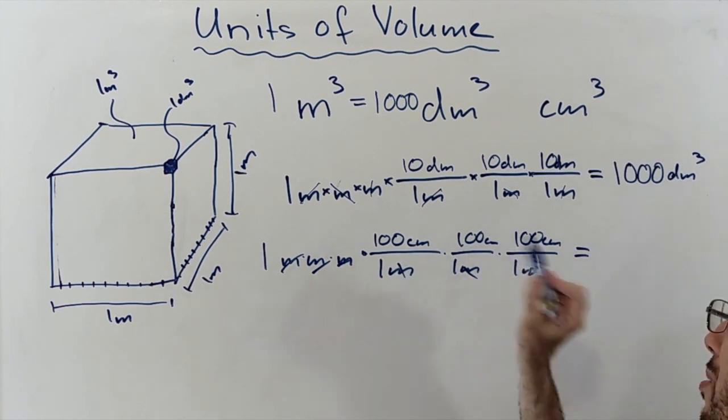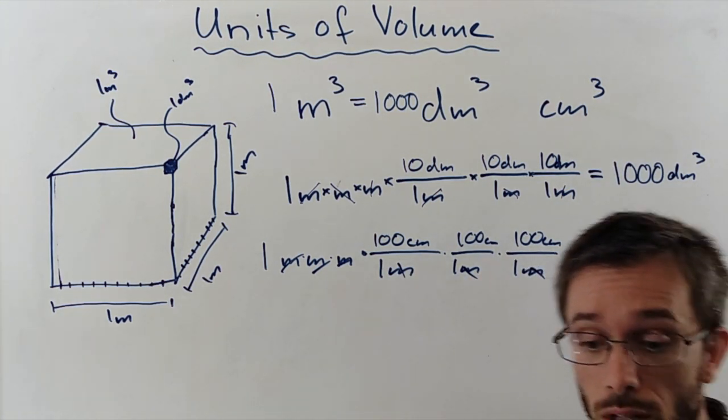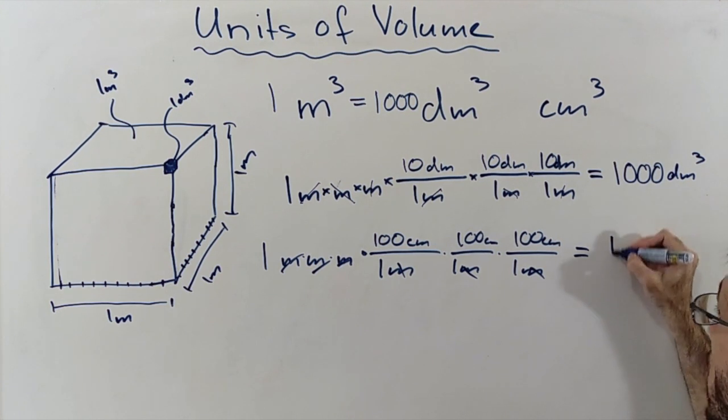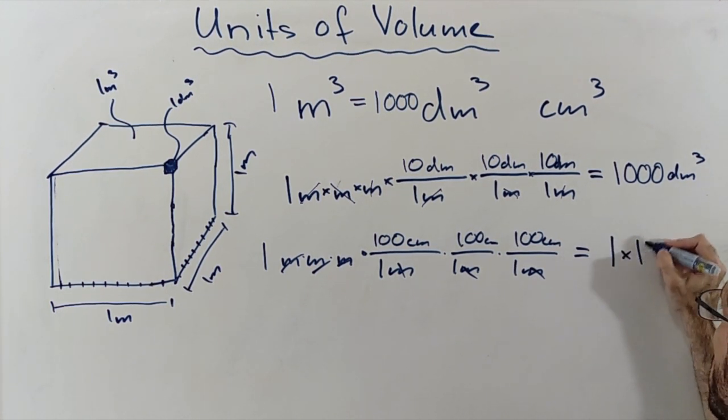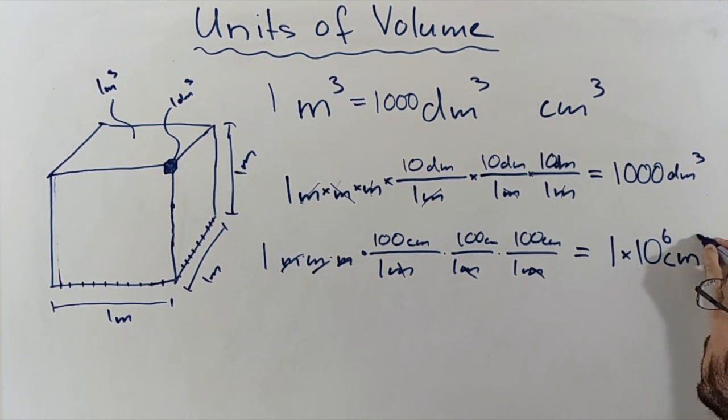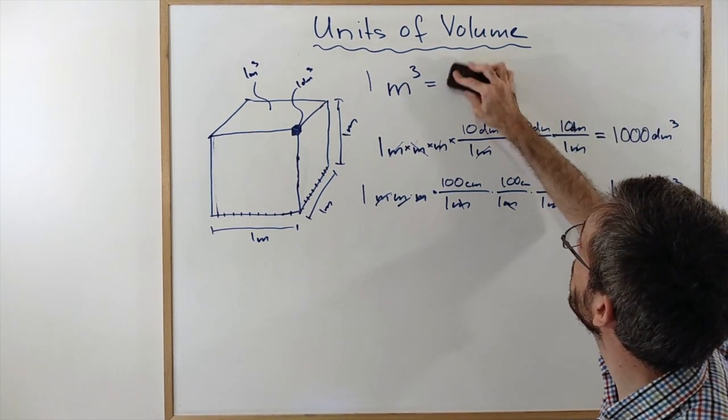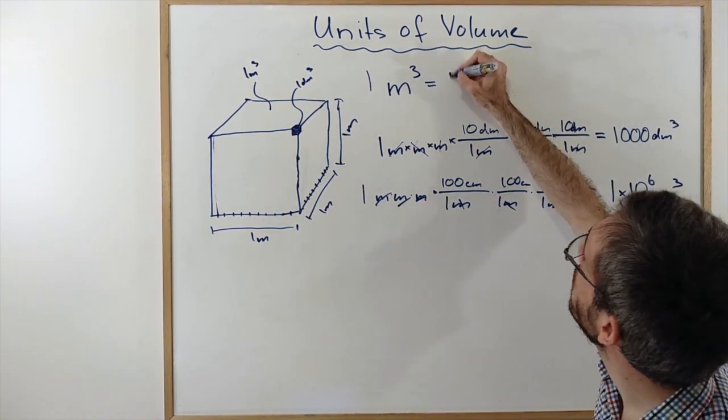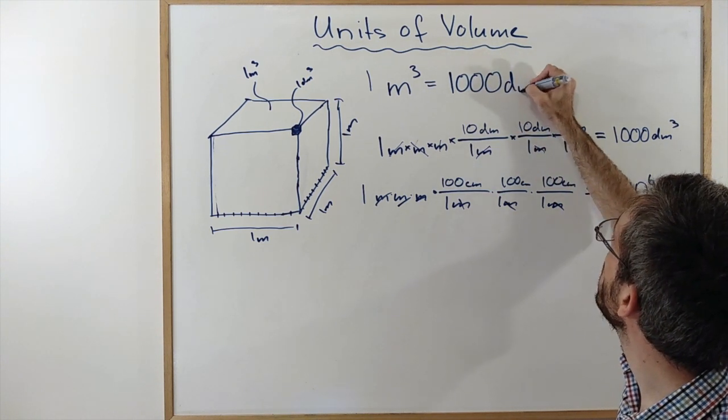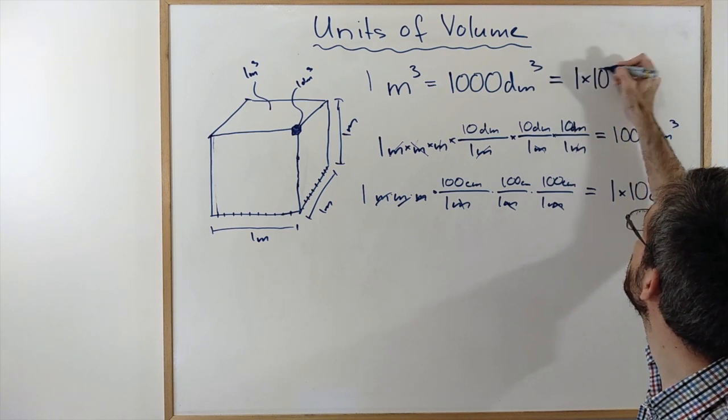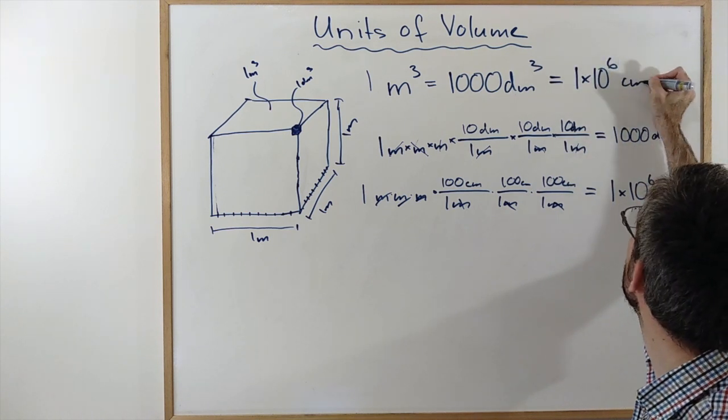And what I get is 100 times 100 times 100, you can type this in a calculator, that should give you a million, or if you do it with scientific notation, 1, 2, 3, 4, 5, 6. So 1 times 10 to the 6 centimeter cube. So I can rewrite here, my 1 cubic meter is 1,000 decimeter cube equals to 1 times 10 to the 6 centimeter cube.